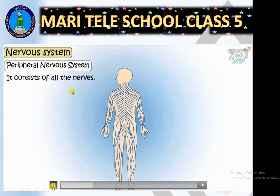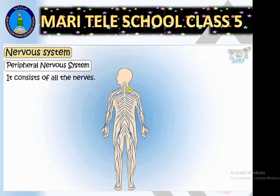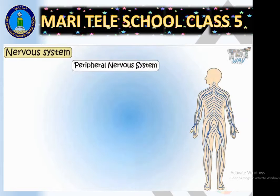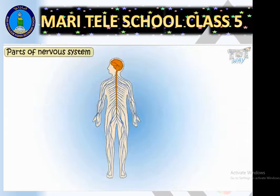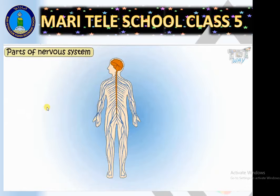The peripheral nervous system consists of all the nerves, which may arise from the spinal cord or the brain. There are three main types of nerves, which we'll discuss later. The peripheral nervous system is further divided into the autonomic nervous system and the somatic nervous system, but we won't study those subdivisions here. We just need an understanding of the central nervous system and the peripheral nervous system.